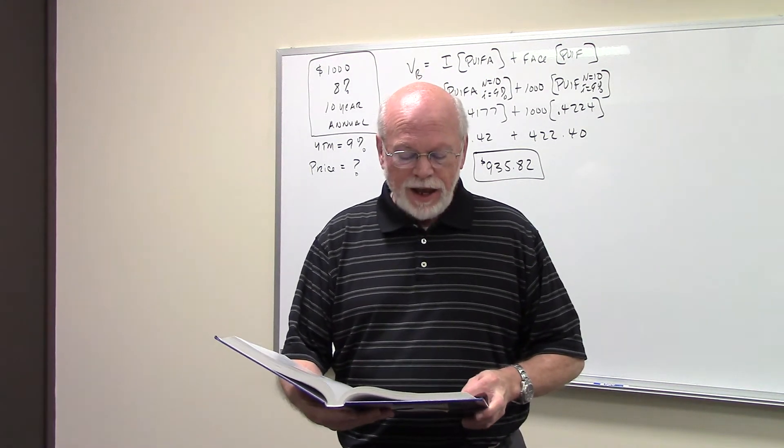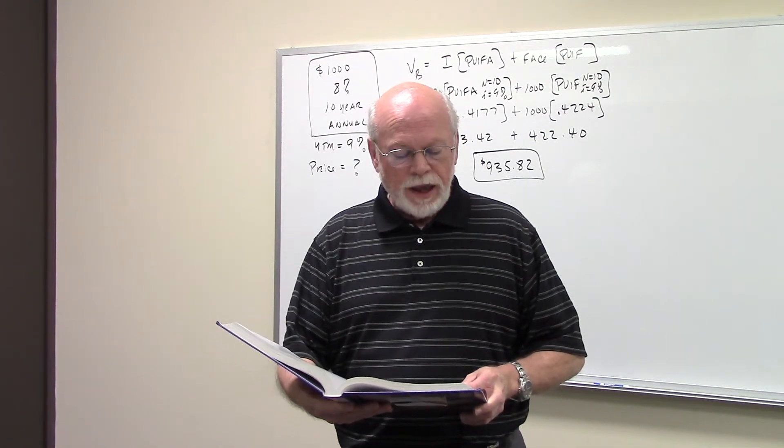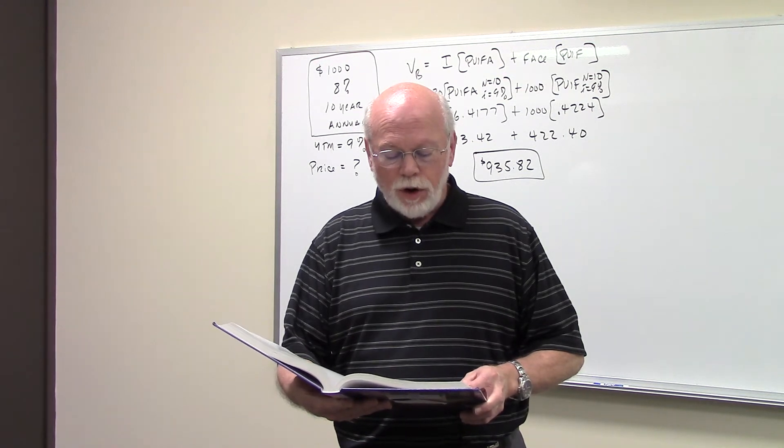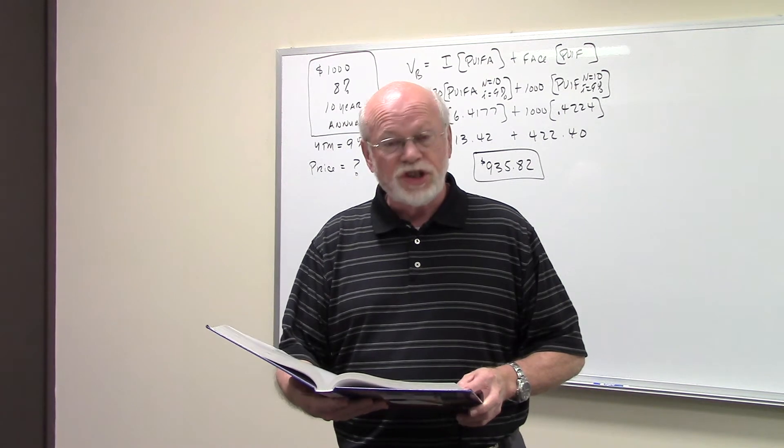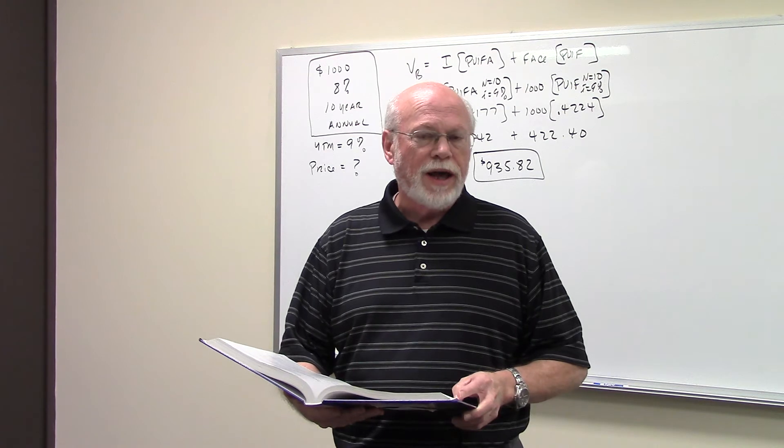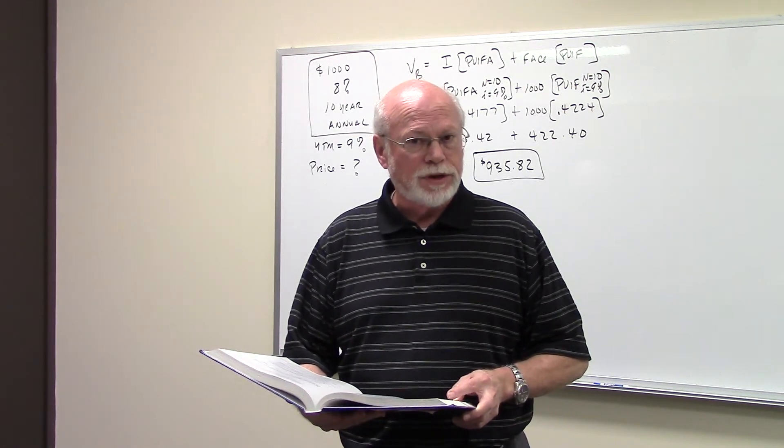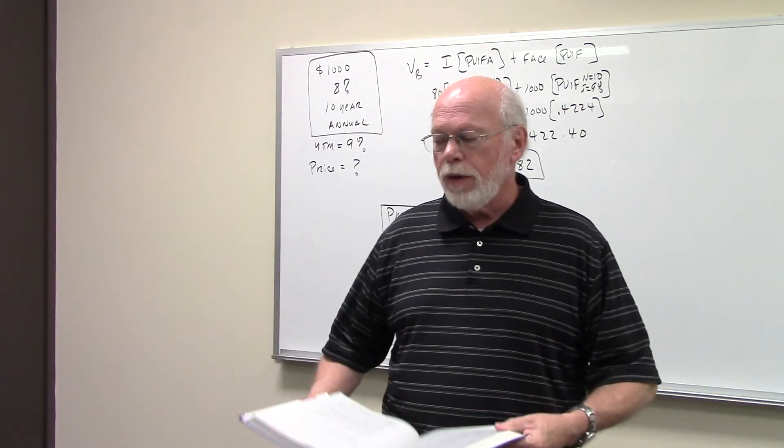In this problem, Callahan Motors bonds have 10 years remaining to maturity. Interest is paid annually. They have a $1,000 par value or face value. The coupon interest rate or stated rate on the bond is 8%, and the yield to maturity is 9%. That's the investor's required return, the minimum acceptable return. What is the bond's current market price?